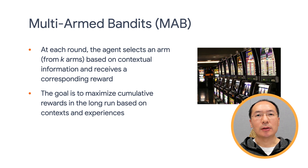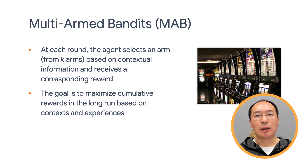An example for multi-armed bandits, as the name says, is the slot machines. Imagine we have a set of slot machines that offers different payouts. Our job is to find the one with the best payouts before we lose too much money. The simple strategy of trying each slot machine once and then picking the one that paid the most wouldn't work here, because the payouts are probabilistic. We need to try each slot machine many times to gather information before we settle on the best one.